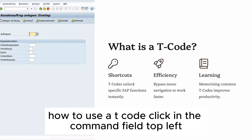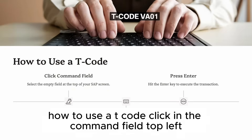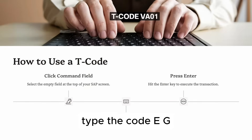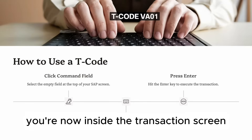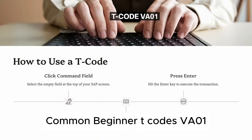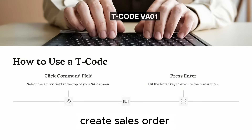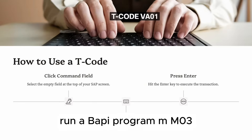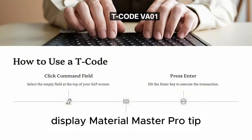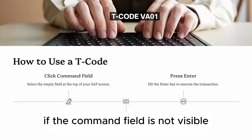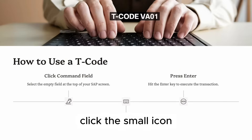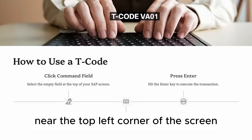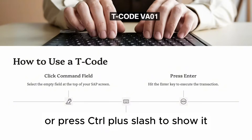How to use a T-code: click in the command field (top left), type the code — e.g. VA01 — and press Enter. You're now inside the transaction screen. Common beginner T-codes: VA01 — Create Sales Order; ME21N — Create Purchase Order; SE38 — Run ABAP Program; MM03 — Display Material Master. Pro tip: if the command field is not visible, click the small icon near the top left corner of the screen or press Ctrl + slash to show it.